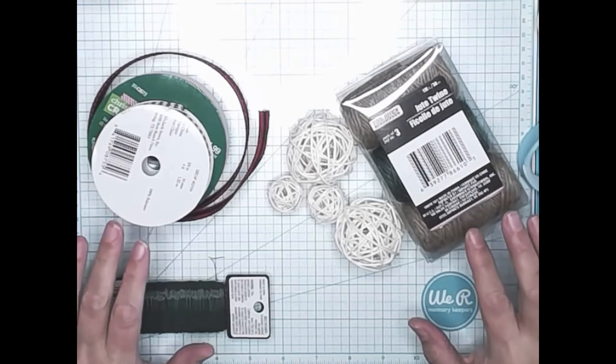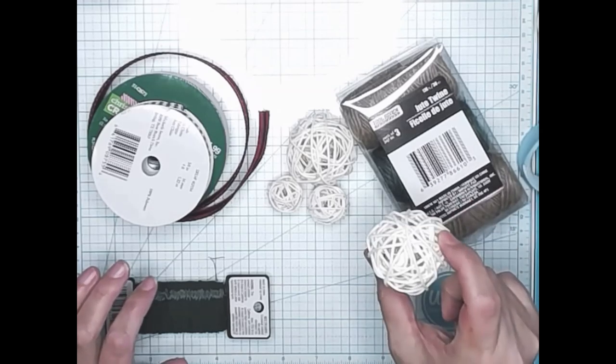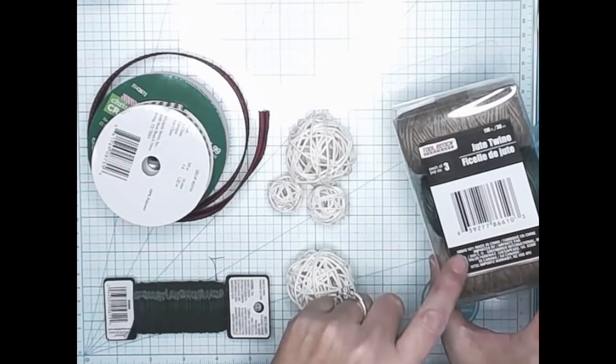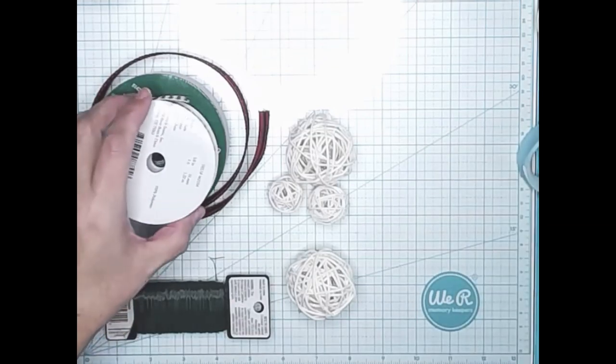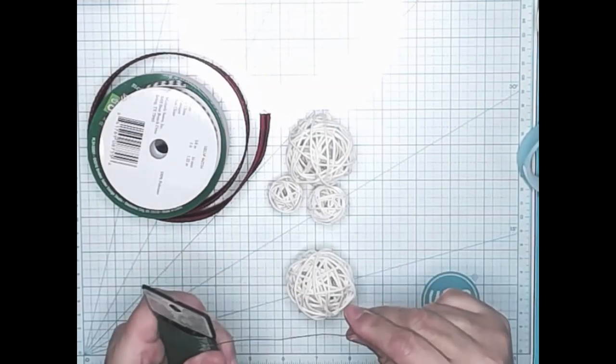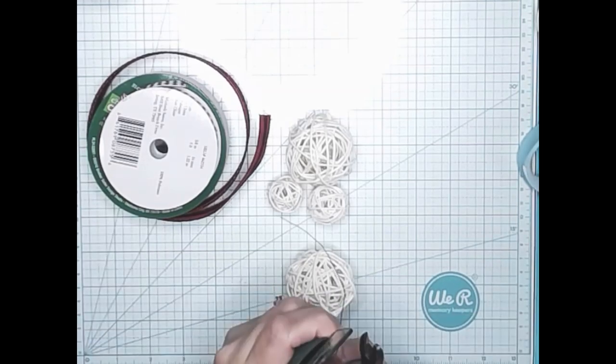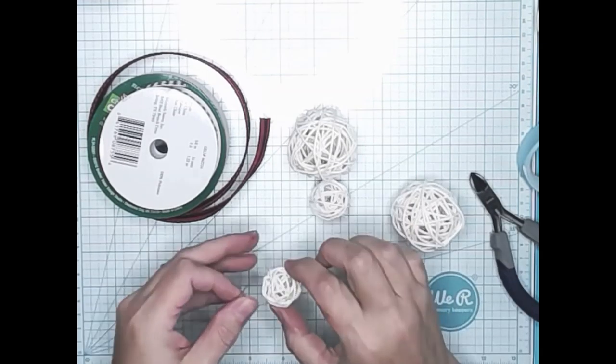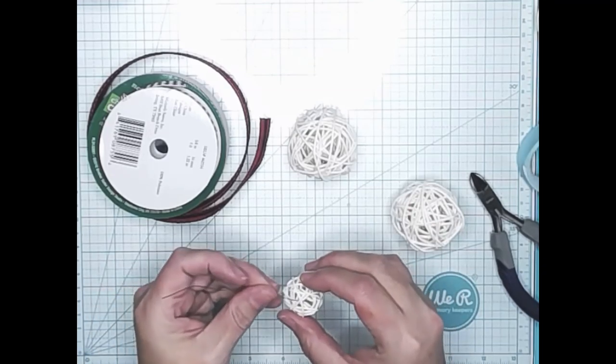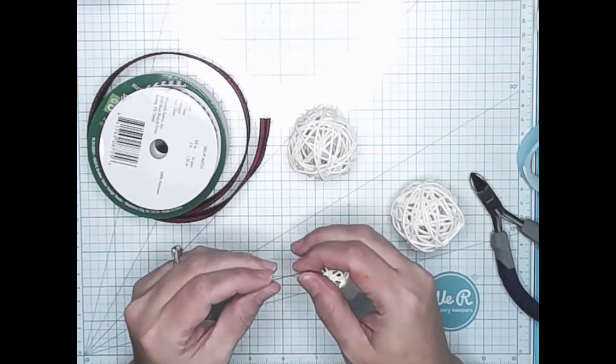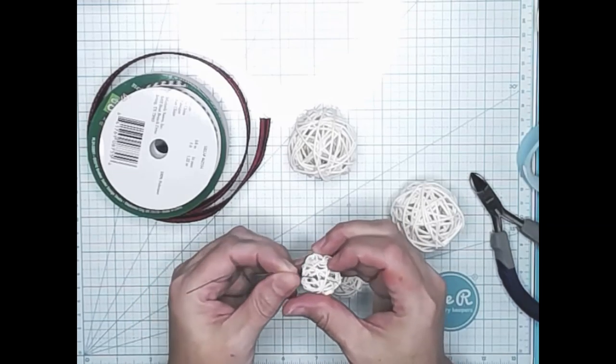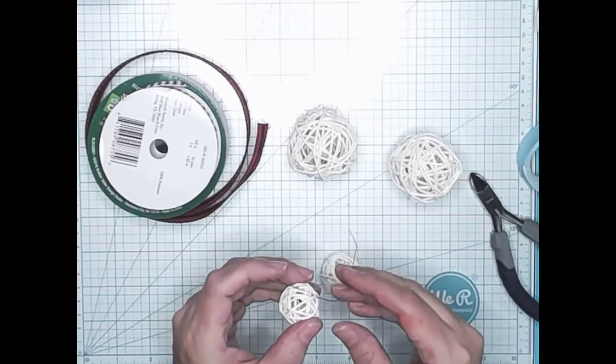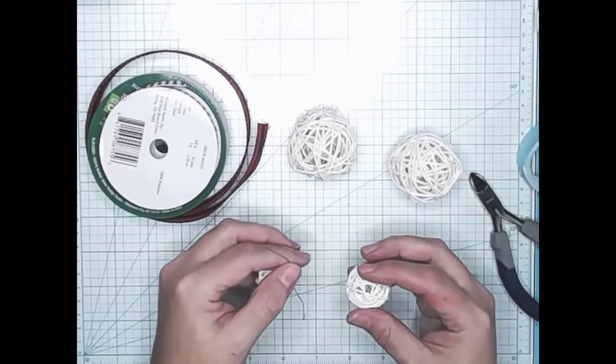The main items you're going to need for this next ornament are some of these twine balls. You can pick up in the floral section at Dollar Tree. Some twine, and I'm using this thinner twine you can pick up back in the automotive section, the tool section. And some ribbon. And a little bit of floral wire. The first thing that I'm going to do is just take a small piece of floral wire and I'm just going to use it to attach together the two small twine balls. And I'll do the same for the two large twine balls. And I had kind of gone through and sized them so that I had one that was a little bit smaller and one that was a little bit larger for each of these sizes because we're making two separate snowmen.